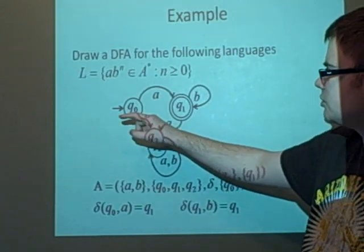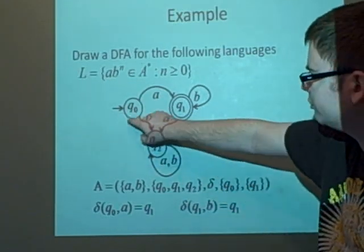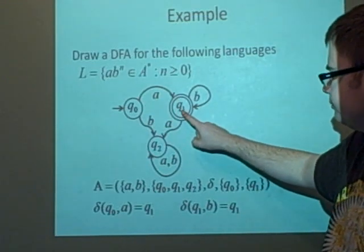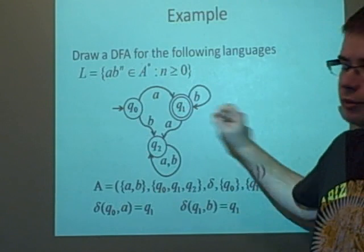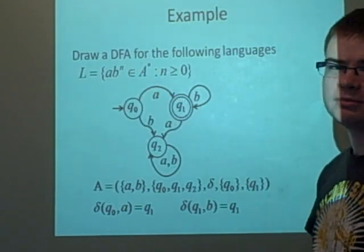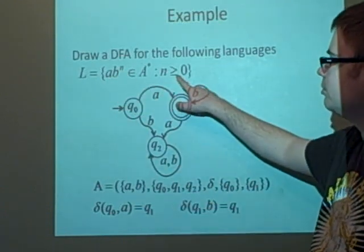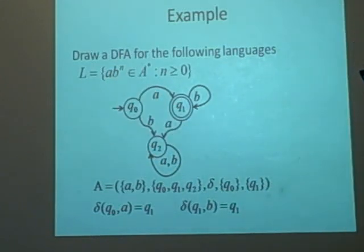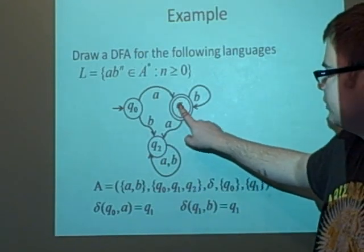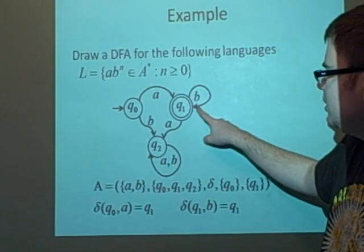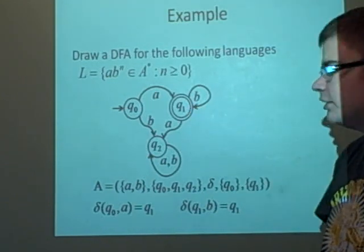From q₀, when we apply a, we go to q₁. Because b can be to the power 0, we could just have a in our language, so q₁ can be a final state. Then we want to have as many b's as we want while keeping it as a final state, so b loops back to q₁.